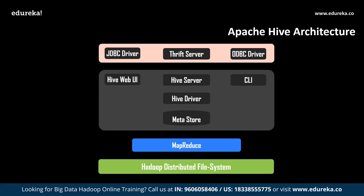MapReduce is the processing layer which executes the mapping and reducing jobs on the data provided. The HDFS, or Hadoop Distributed File System, is where the data we provide is stored. This completes the architecture of Apache Hive.